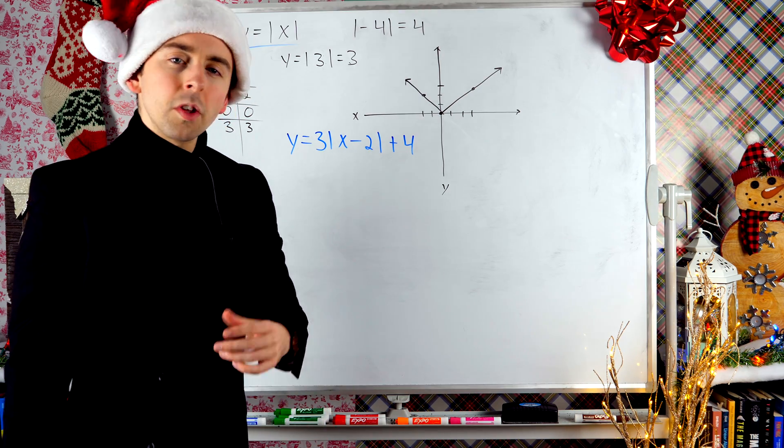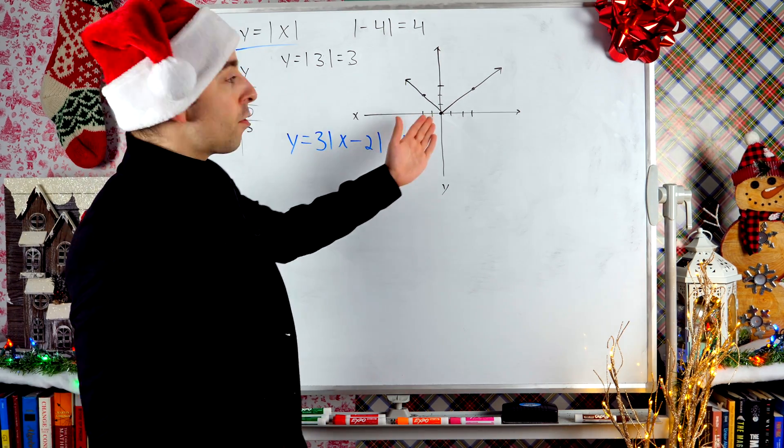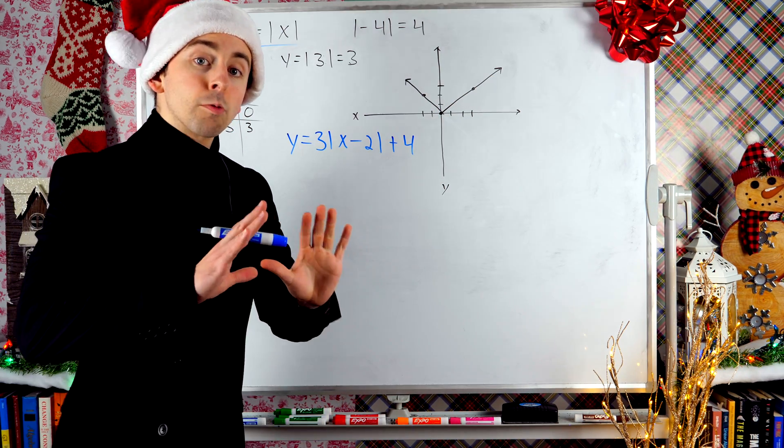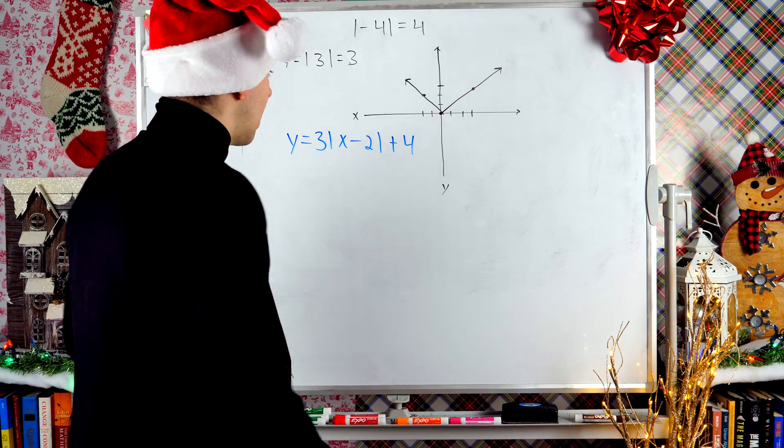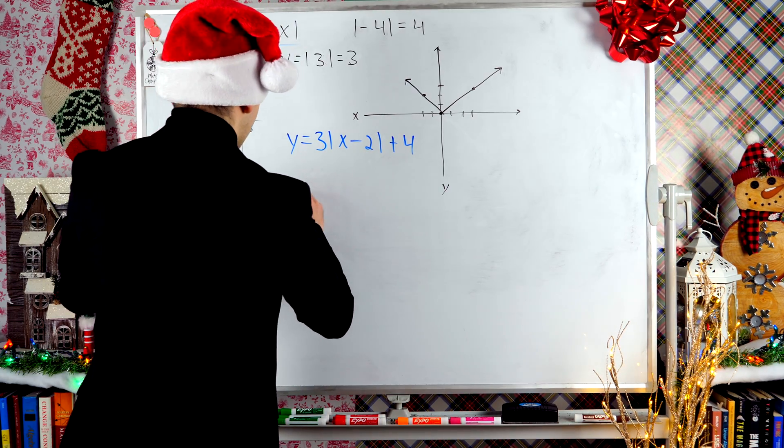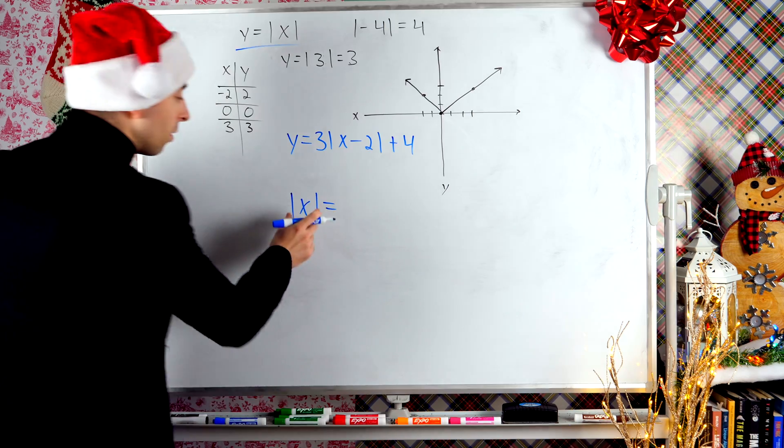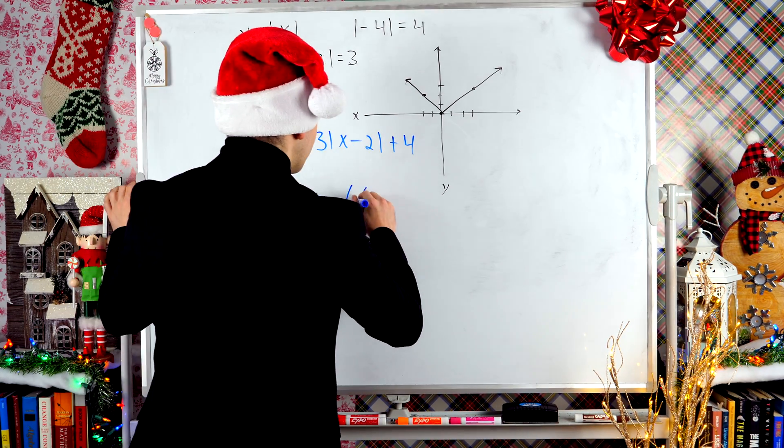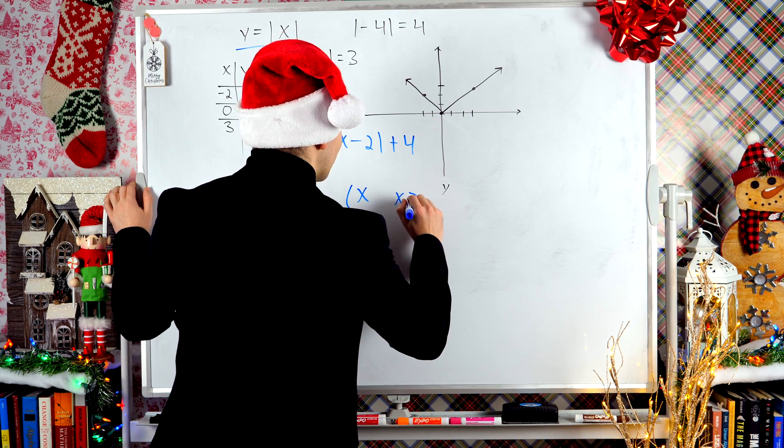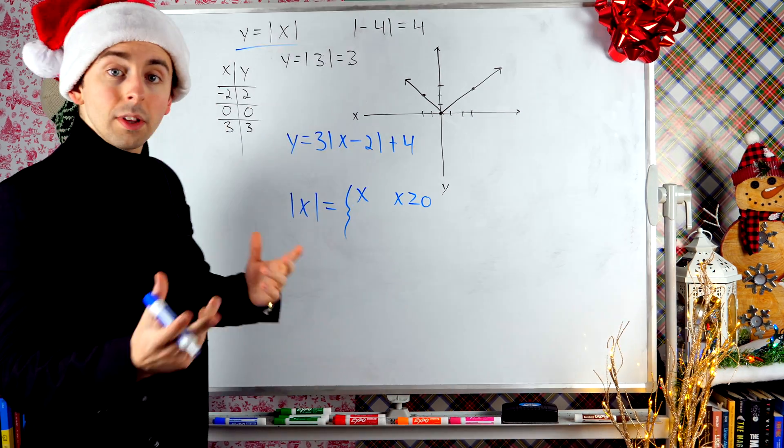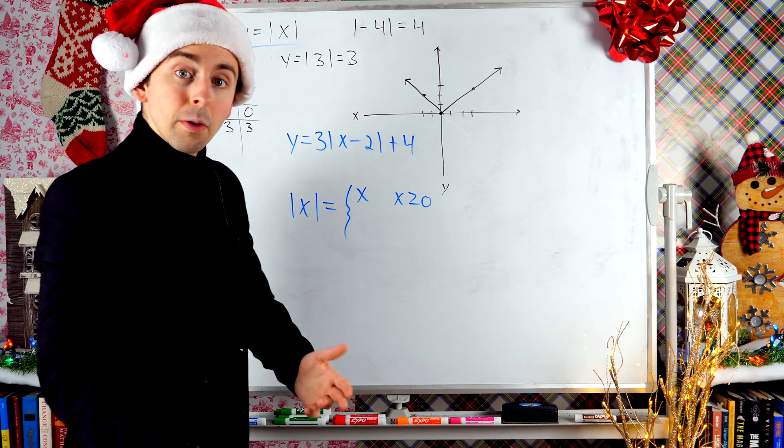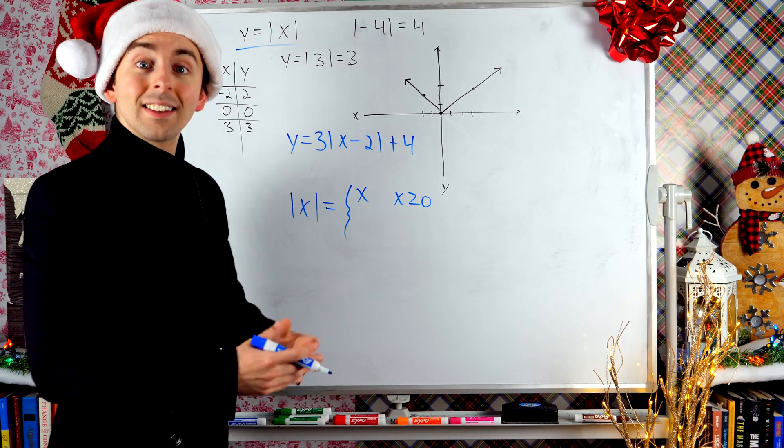Before we go, let me show you one more neat thing about this graph of the absolute value function. A nice rigorous way that we can define absolute value is like this. We can say that the absolute value of a number x is x if x is at least 0. So this says the absolute value of x if x is at least 0 is just x. It doesn't change it.